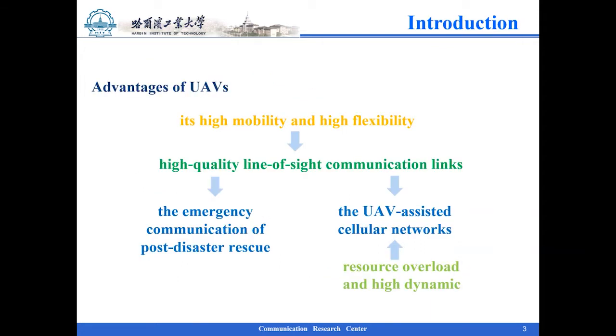Let's look at the advantage of the UAV. Due to high mobility and flexibility, UAVs can provide high-quality last-mile communication links when the ground environment is not compliant. Meanwhile, the fixed deployment infrastructure cannot meet the requirements of resource overload and high dynamics, which provides a great advantage for UAV-assisted cellular networks. Therefore, UAVs have been widely used in emergency communication of post-disaster rescue and UAV-assisted cellular communication.